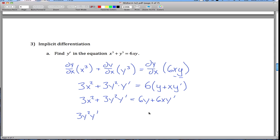So we'll subtract this guy over to the right side, subtract 6xy prime over to the left, leave that alone, and then we got this 3x squared term.